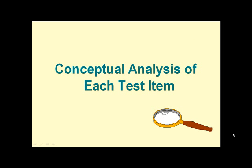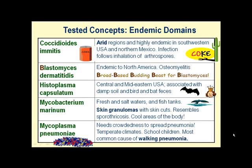Let's analyze these options quickly. Coccidioidomycosis was the correct answer — the question was testing you about the endemic domains of these bugs. Coccidioidomycosis is a fungus; at Northwestern we coined the term 'Coke' for Coccidioides immitis. Where does a cold can of Coke make more sense than in the middle of a lonely hot desert? That's where you see Coccidioides immitis. For blastomyces, the mnemonic is: 'that broad-based budding beast is Blastomyces.'